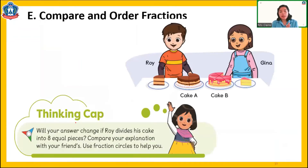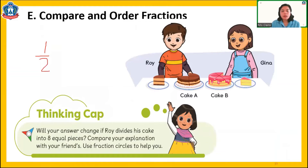Will your answer change if Roy divides his cake into eight equal pieces? If one whole is divided by eight, it becomes one eighth. But Roy took one quarter — and one quarter divided into eight becomes two eighths. So Roy gets one quarter or two eighths. Gina is still one eighth. The answer is still the same — Roy gets one quarter or two eighths, and Gina is still one eighth.